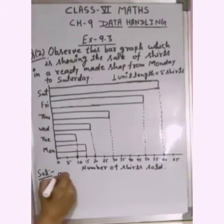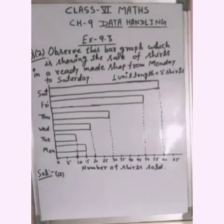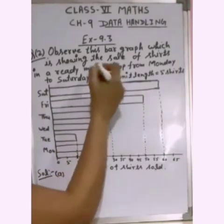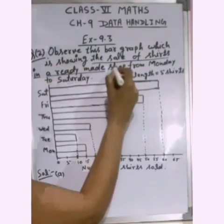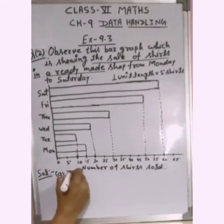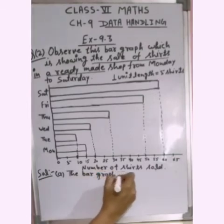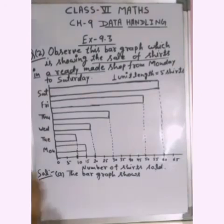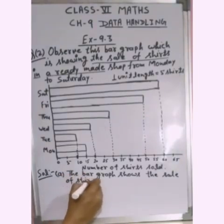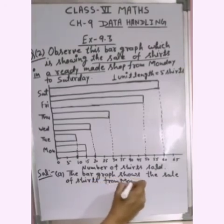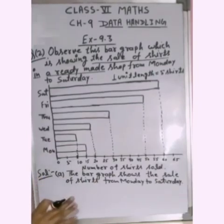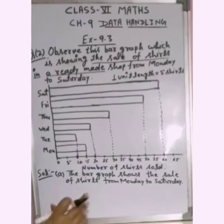The first part of Question 2 asks: What information does the above bar graph give? The answer is: the bar graph gives information about the sale of shirts in a ready-made shop from Monday to Saturday — that is, how many shirts were sold on each day.